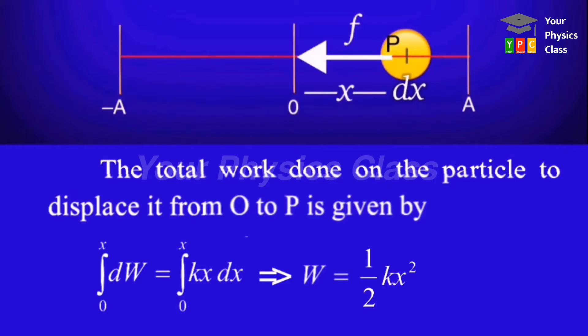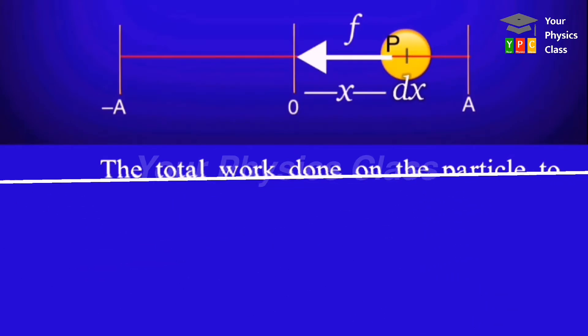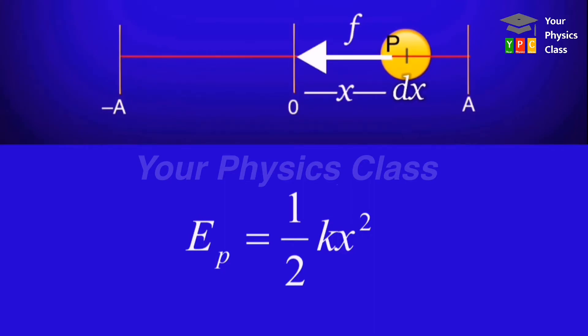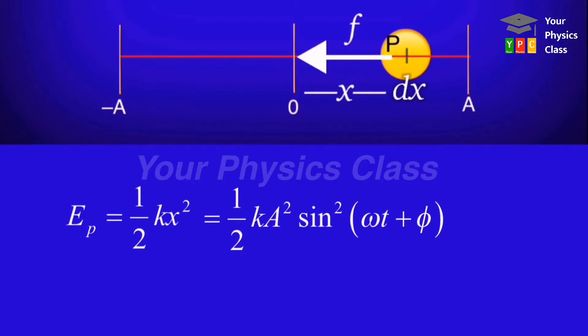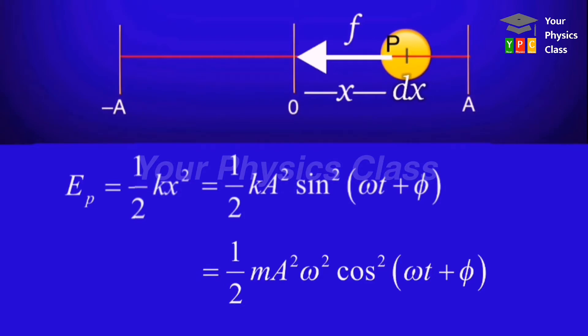Now this work is equivalent to potential energy. So I am writing here potential energy equal to half kx square. So this became potential energy at displacement x. Now in terms of time, how should this formula be? So we'll take the formula half kx square. Here, in place of x, we'll substitute the displacement formula a sin of omega t plus phi.